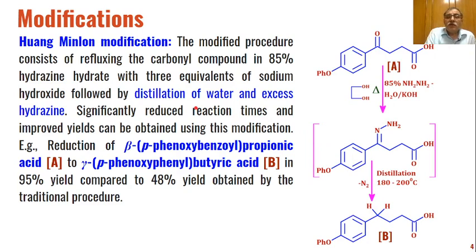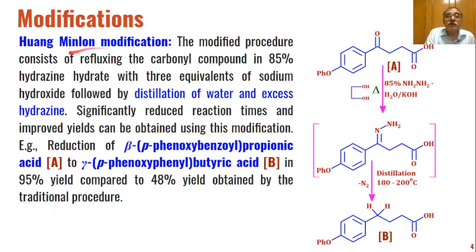There are many modifications to Wolf-Kishner conditions depending on the functional groups present in the aldehydes and ketones. The most important modification is the Huang Minlon modification, where the carbonyl compound is refluxed in 85% hydrazine hydrate and three equivalents of sodium hydroxide as base.